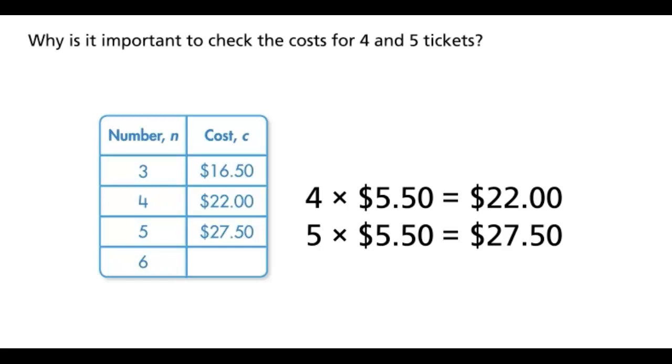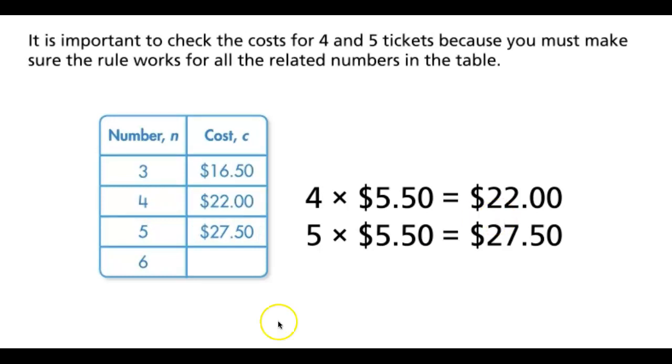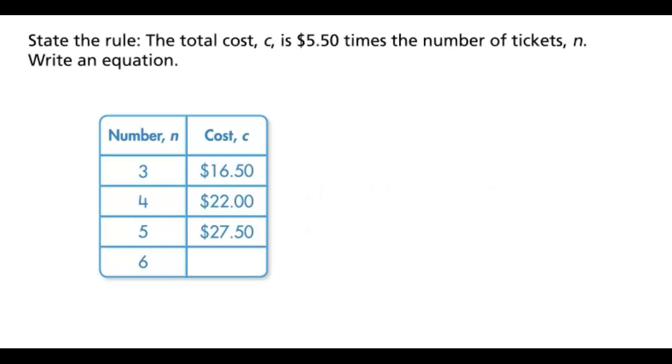Why is it important to check the costs for 4 and 5 tickets? It is important to check the costs for 4 and 5 tickets to make sure that the rule applies to everything. If you check 4 times 5.50, it's 22, and so on, like what we did earlier. If that rule applies to each one, that rule works. You must make sure the rule works for all the related numbers in the table.